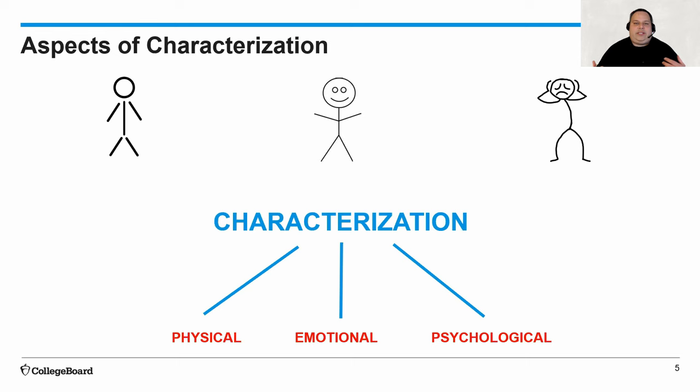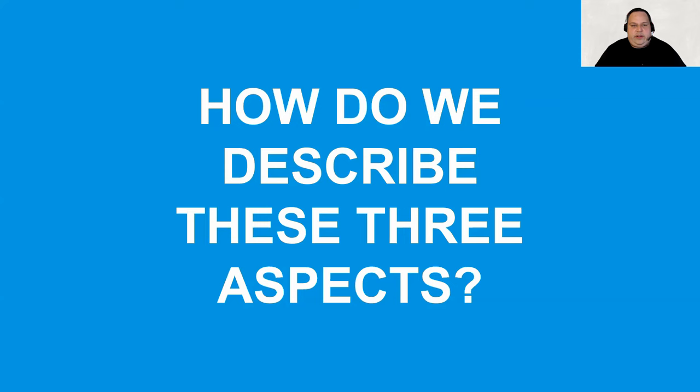The physical, emotional, and psychological states of mind of characters make up what we're going to be calling characterization. Once we delve deeply into these and start talking about the function of characterization — which we're going to do in later videos — you're going to get a more total composite of each character.